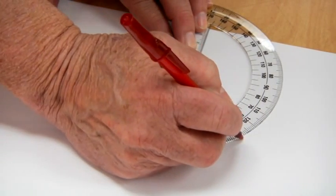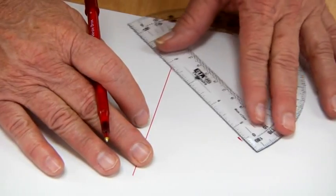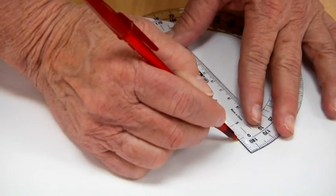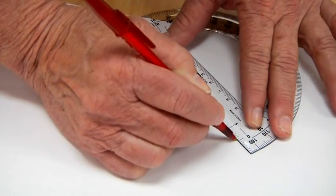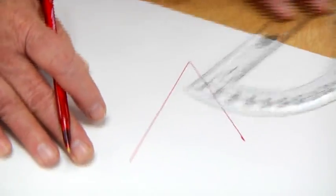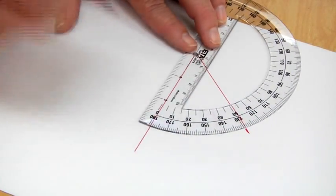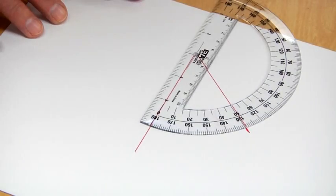You can look across at the 50, make a mark, and then take the protractor and draw a line from that mark into the vertex or the point of the angle. Then, if you want to double check, you can line up the circle and measure it to make sure it's the right size.